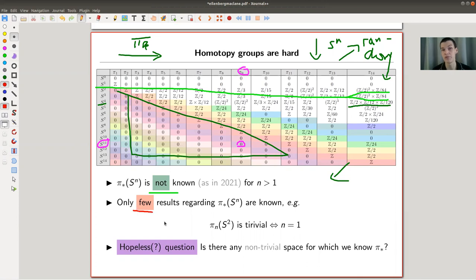For example, in this row you can actually show - link in the description - a very surprising statement in my opinion: π_n of S^2 is trivial if and only if n is one. So at least you can say something like that - there are no other zeros in this funny row here.